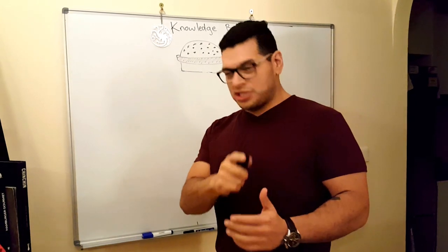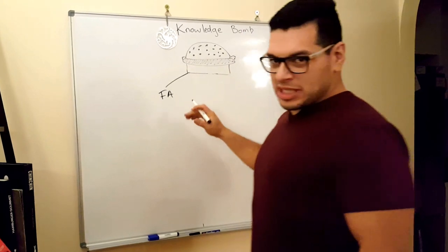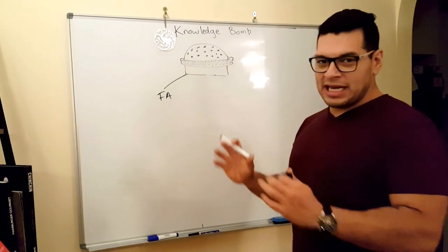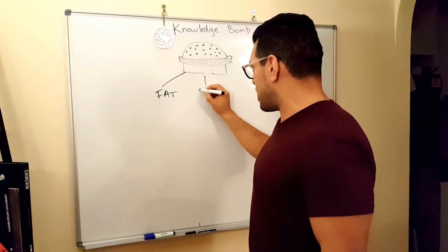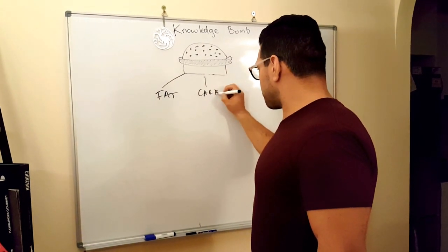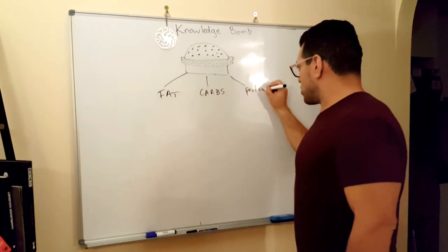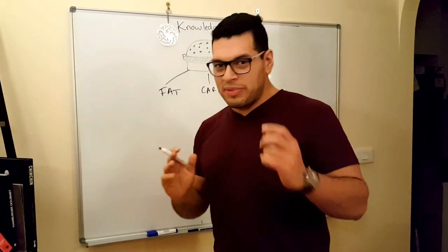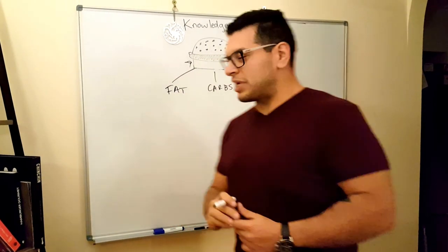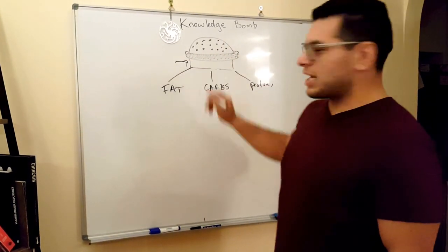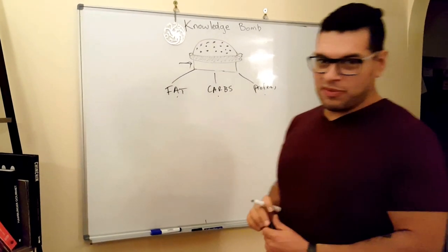The first thing you need to understand about food is that it's built up of three main ingredients: fats, carbs, and proteins. These are the three things that are in every bit of food that goes into your body. This is energy. This type of energy is broken down into three simple factors. The first factor is fat.